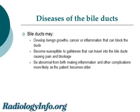Bile ducts get a variety of diseases. They may be affected by benign growths, inflammation, or cancer. All of these diseases can block the ducts, backing up the bile into the liver, and causing the patient to develop a yellow skin, also called jaundice. Stones can form in the gallbladder and slip into the bile ducts, causing pain and blockage. Bile ducts also can be abnormal by birth, making it more likely for a patient to get into trouble with one or another of these diseases during their lifetime.